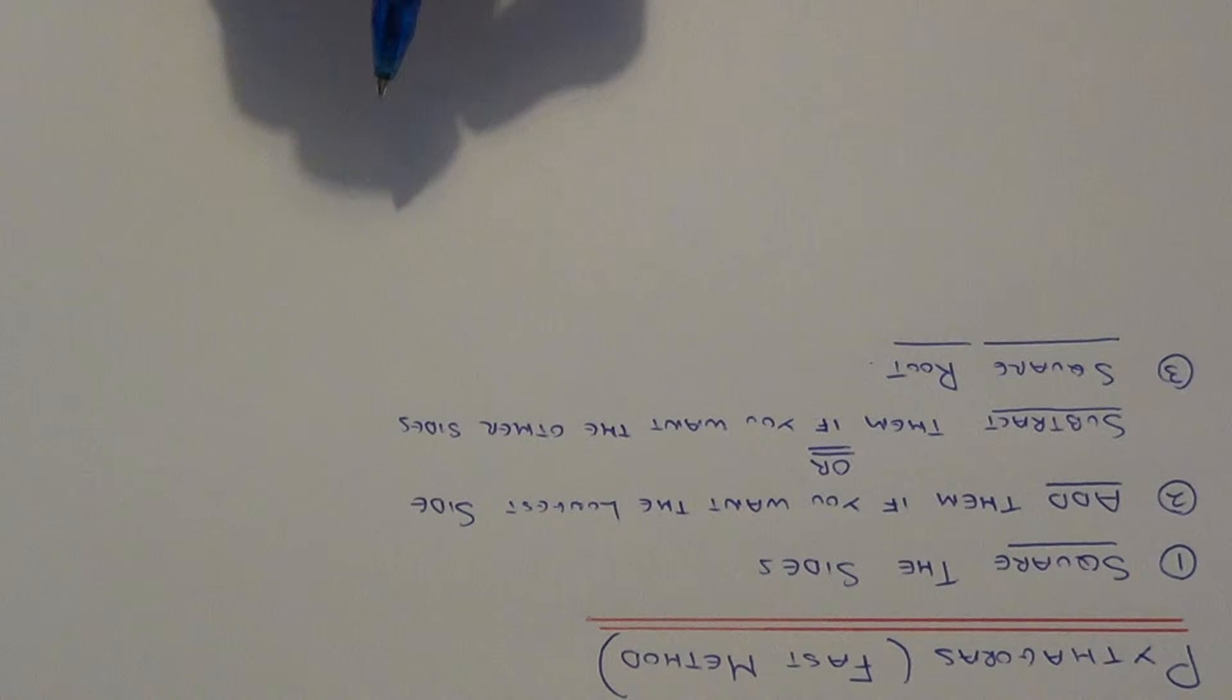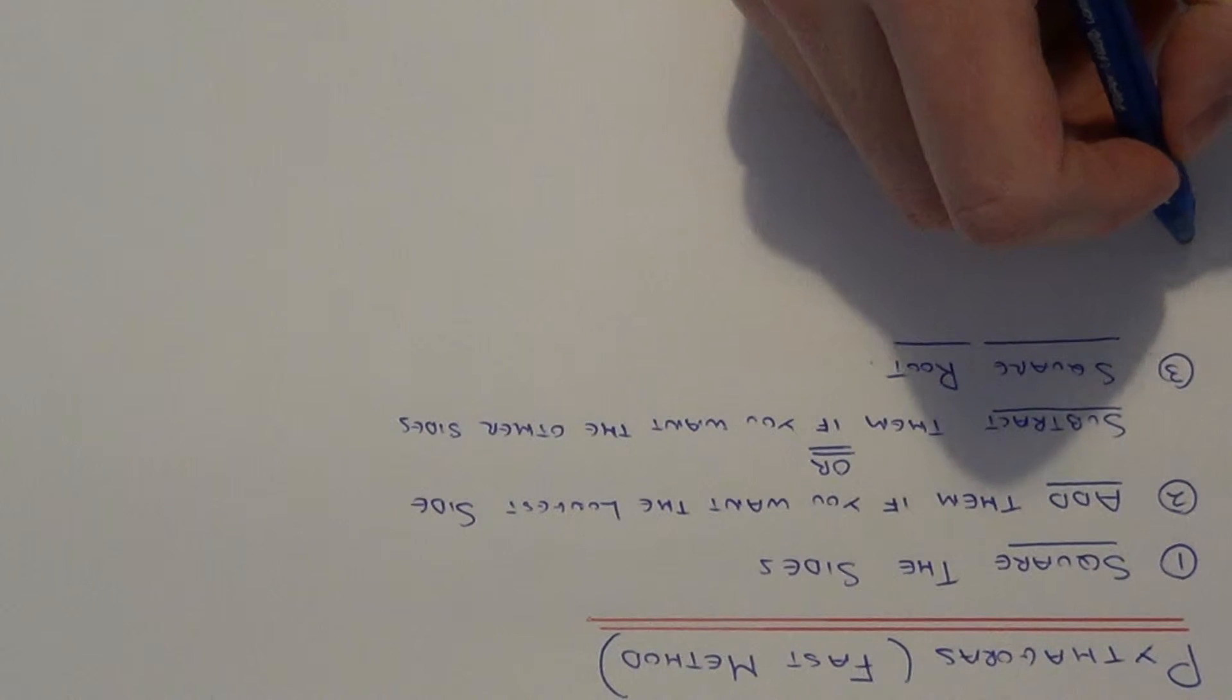And then the final step is to square root your final answer. Remember, Pythagoras is for working out the length of the missing side in a right angled triangle. So let's have a look at an example.